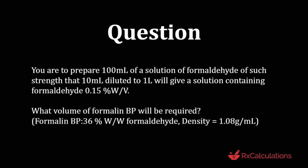Let's get right to this question. You have to prepare 100 milliliters of a solution of formaldehyde of such strength that 10 milliliters diluted to 1 liter will give a solution containing formaldehyde 0.15% weight by volume. What volume of formalin BP will be required? Formalin BP is 36% weight by weight formaldehyde and the density is equal to 1.08 grams per milliliter.